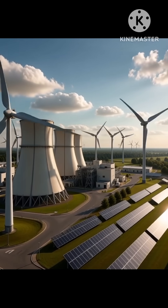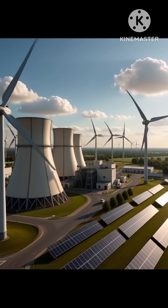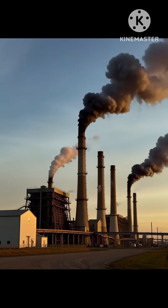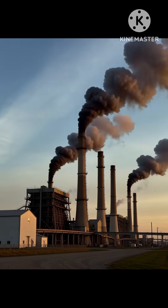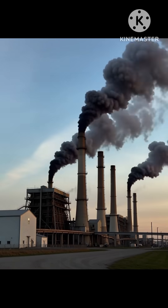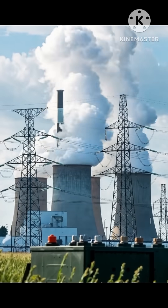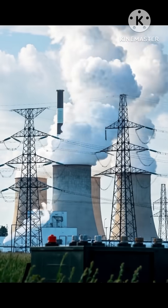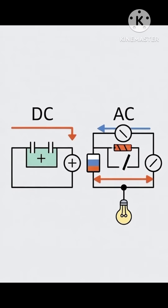Power plants usually generate AC because it's easier to produce using alternators. DC, on the other hand, comes from sources like batteries and solar panels.